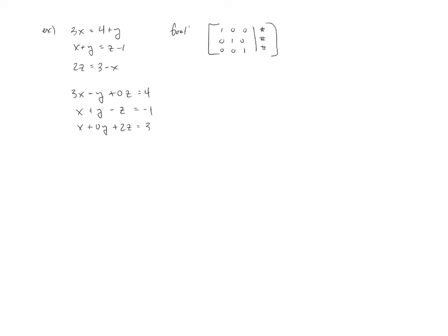It's much easier to view like this because now going into its augmented form, it's a little more clear. We'll have our 3, negative 1, 0, 4, 1, 1, negative 1, negative 1, and 1, 0, 2, 3.